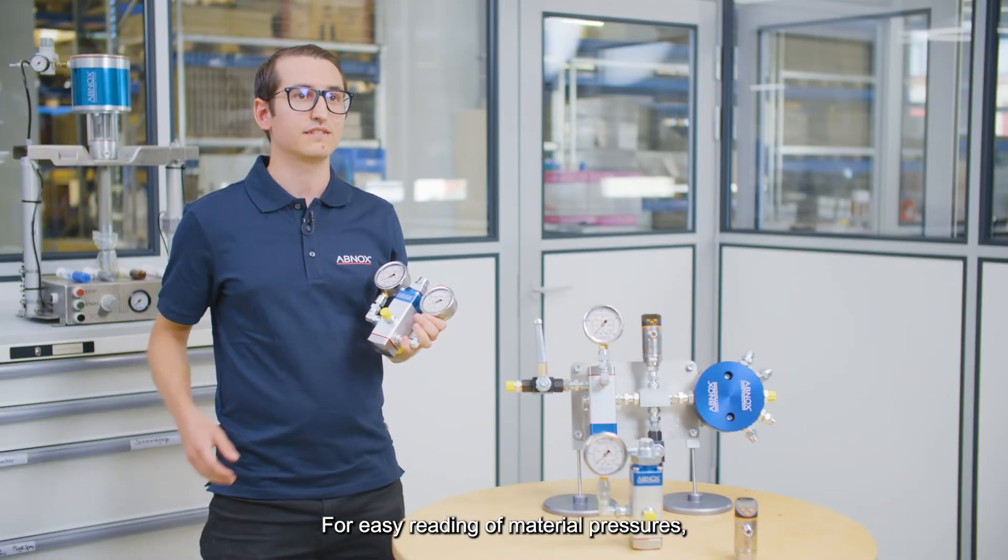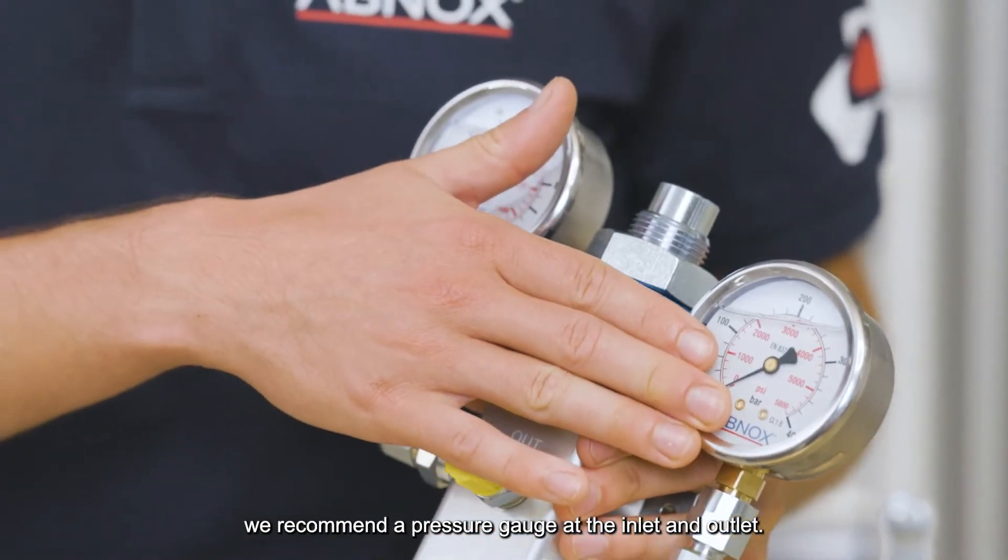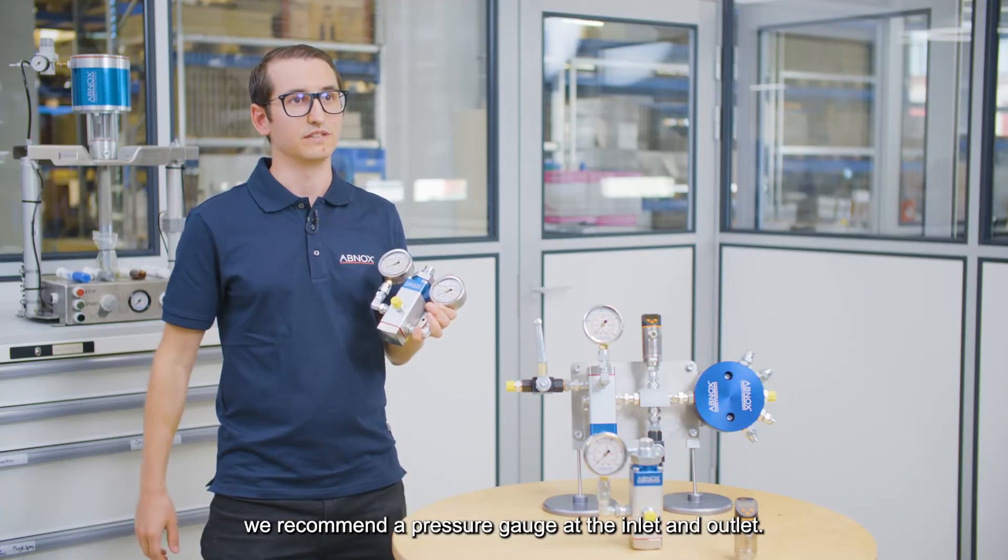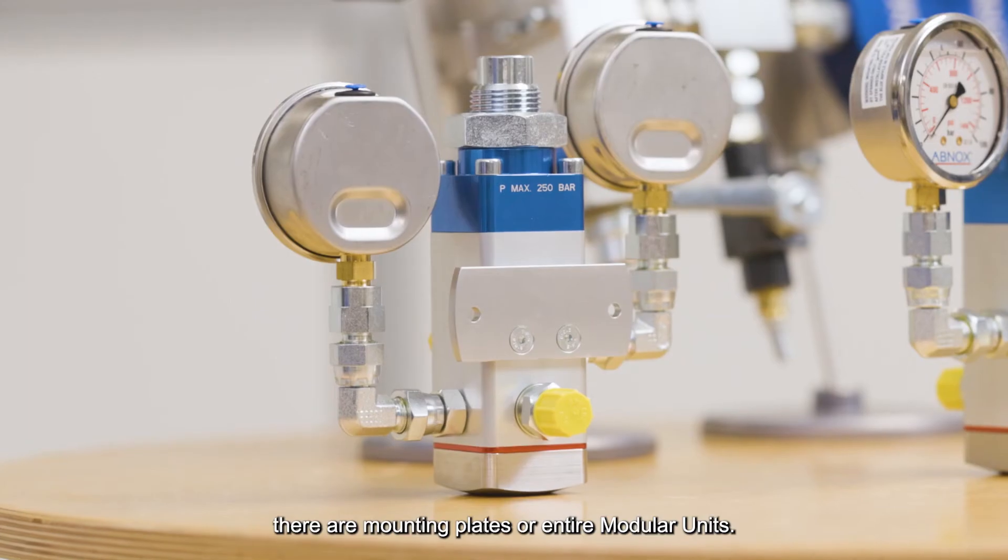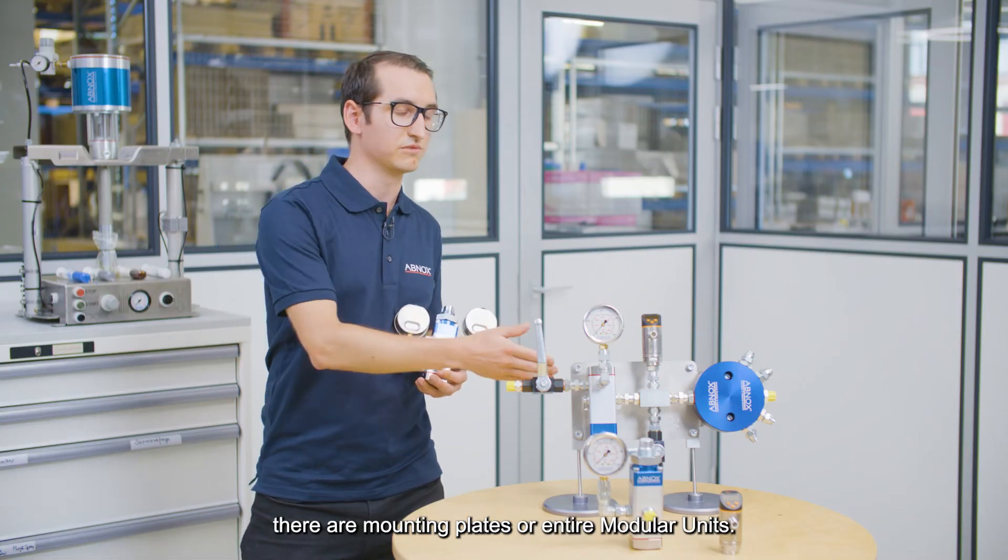For easy reading of material pressures, we recommend a pressure gauge at the inlet and outlet. For easy integration of the material pressure regulator in a system, there are mounting plates or entire modular units.